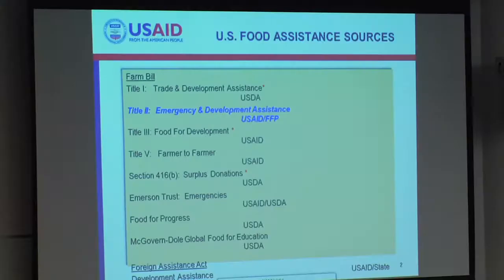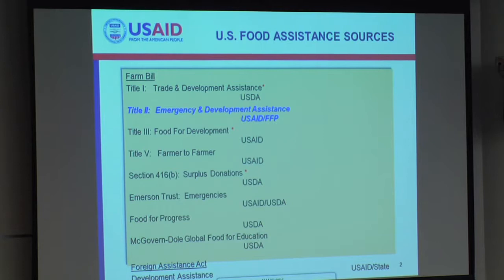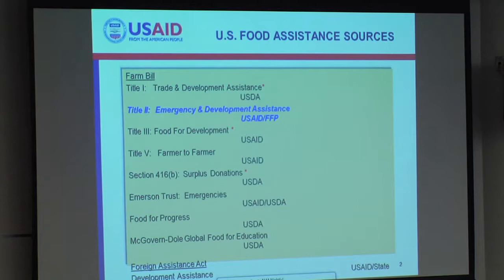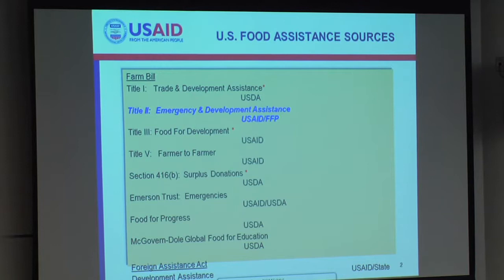In order to know where we're going with food assistance, you need to know where we're coming from. Here you see the legislation authorizing food assistance. U.S. food aid has traditionally been associated with the Agricultural Committees in Congress and was authorized largely through the Farm Bill. Until 2010, aid was provided exclusively in kind — as wheat, sorghum, corn, rice, a variety of pulses, and vegetable oil — all bought in the United States and shipped overseas. Throughout the 70s, 80s, and 90s, the vast majority of food aid was funded under Titles I, III, and Section 416 of the Farm Bill.